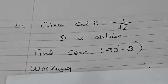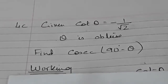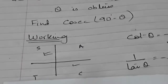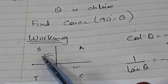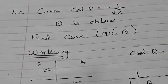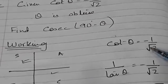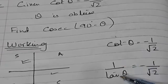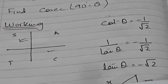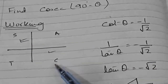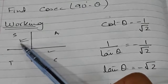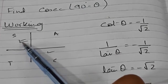Now example 4C: cot θ = −1/√2 and θ is obtuse. Obtuse means the second quadrant. Since cot θ = 1/tan θ, we see that tan θ = −√2, and tan is negative in the second and fourth quadrant. The second quadrant satisfies both hints, so my answer is in the second quadrant, where only sine is positive.